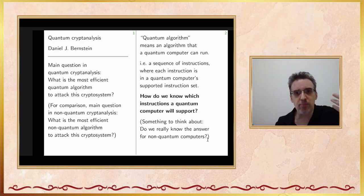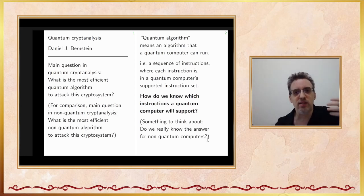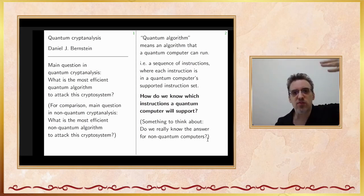The algorithms an attacker can use are sequences of instructions a computer can run, so it's critically important to define exactly what instructions are allowed. If you have different definitions of what a computer can do, you can end up with very different ideas of how fast attacks are. For example, Shor came along and said he could use extra quantum instructions that regular computers don't support, and with those instructions, he can factor large integers very efficiently. You have to know all the instructions computers can efficiently follow — and not overestimate their capabilities either.